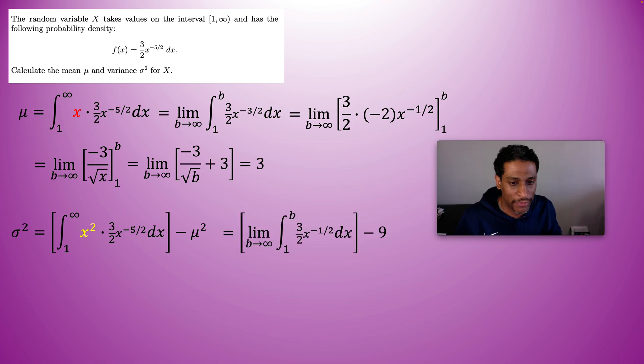The algebra is going to work similarly. We're going to end up bringing in a limit. And when we have x squared and x to the negative 5 halves, that's going to end up as x to the negative 1 half. And the mean was 3, so minus the 9. When you find the antiderivative of x to the negative 1 half, when you add 1 to it, you get x to the half. And dividing by a half is still multiplying by 2.